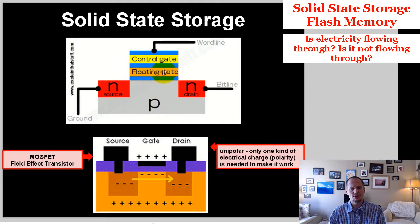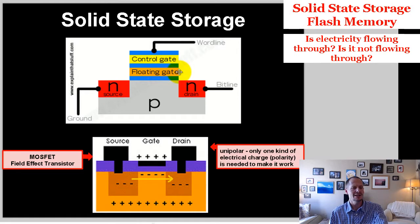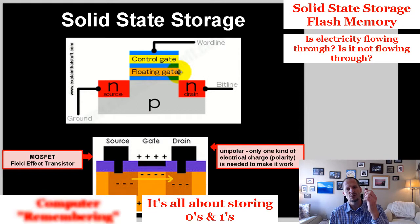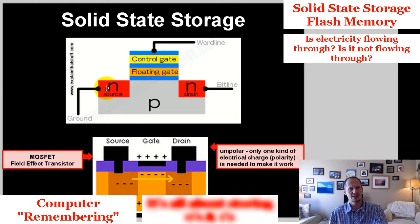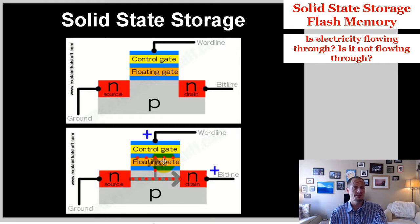If we take this normal MOSFET transistor and add one more gate called the floating gate — in addition to the control gate — we now have solid-state storage, which is what is in flash drives. This solid-state storage allows zeros and ones to be remembered even when no electricity is continually being applied. When electricity is applied, some electrons get pulled up into the floating gate, and when electricity goes off those electrons stay there. Electrons being there can mean one thing; not being there means something else.